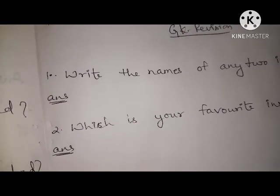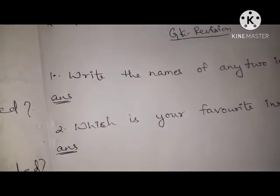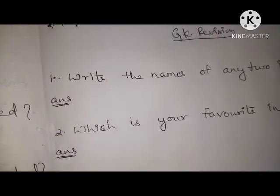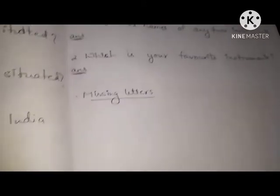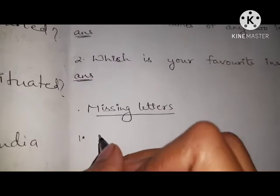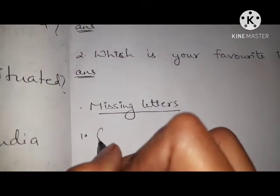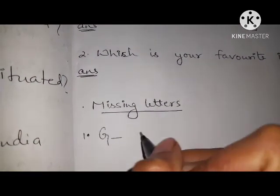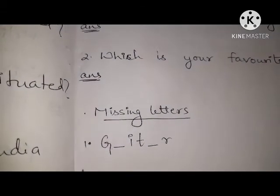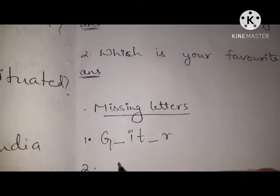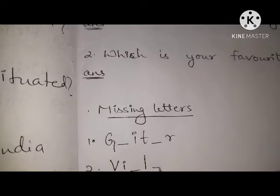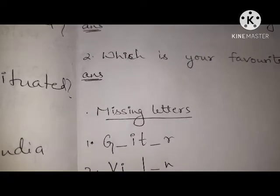Now I will give some missing letters. Number one is G-U-I dash I-T dash R. Number two is V-I dash L dash N.